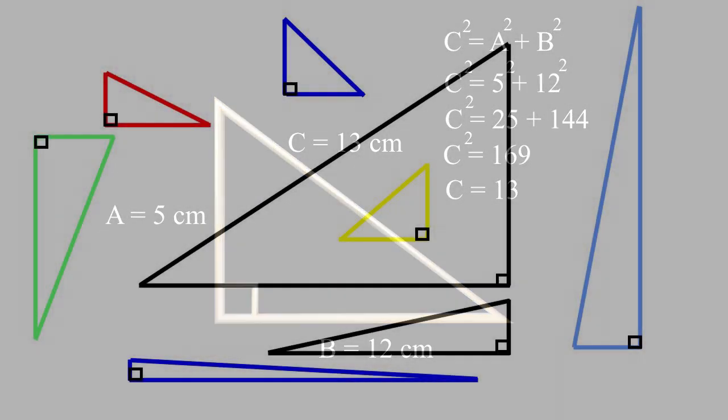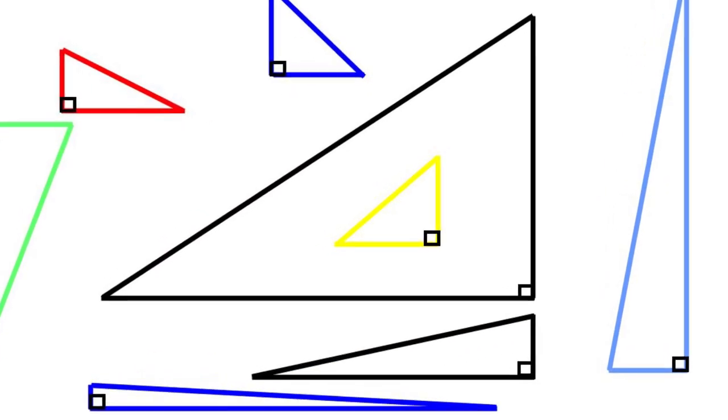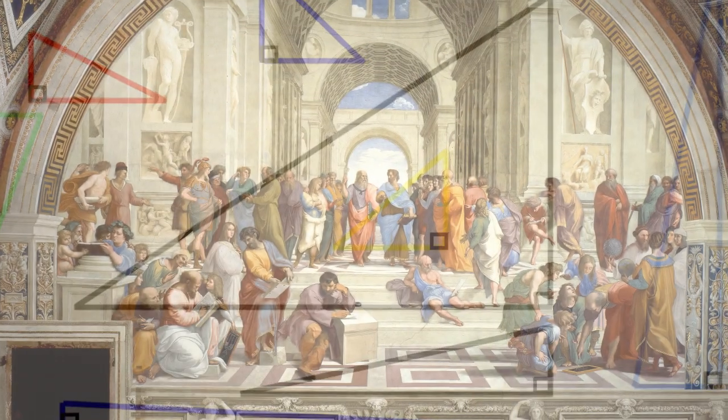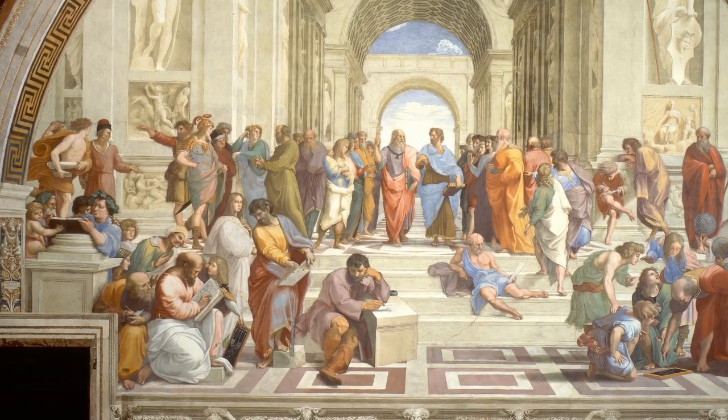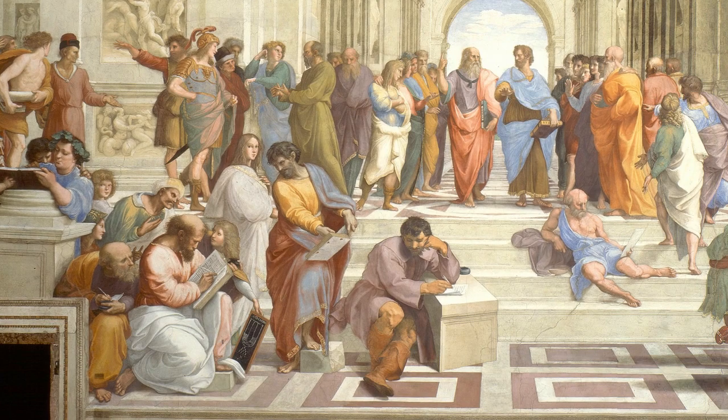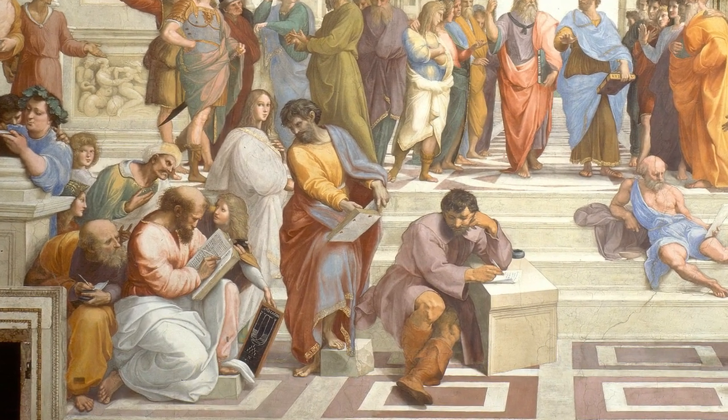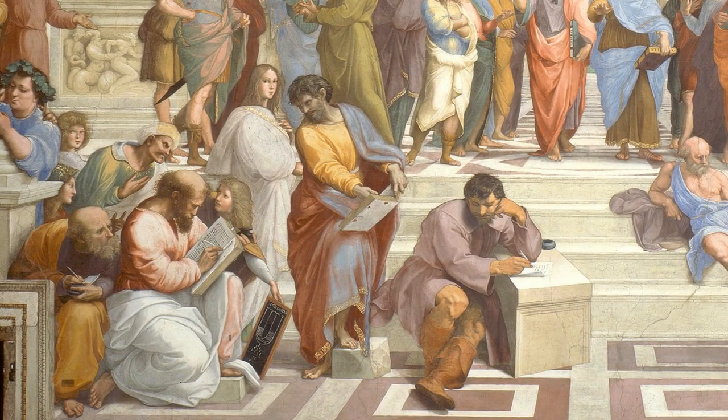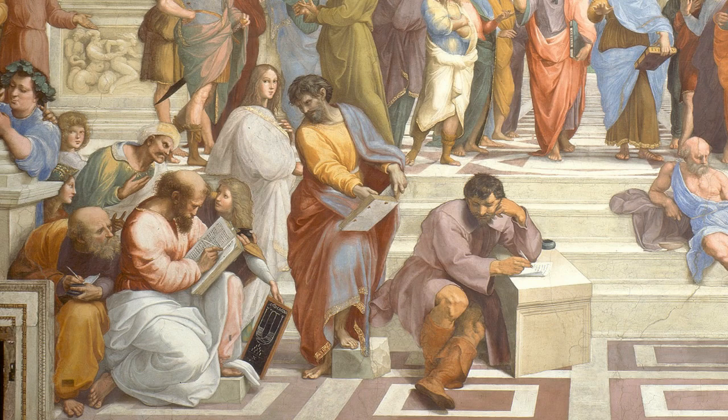The knowledge that the sides of right-angled triangles have this relationship predates Pythagoras. But he and his followers, the Pythagoreans, proved the theorem to be true. Before I demonstrate Pythagoras' ingenious proof, perhaps you would like to try to prove that C squared equals A squared plus B squared.